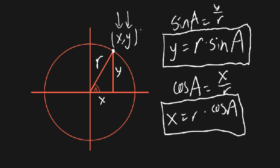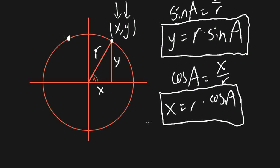This also gives us a way to interpret cosine and sine values. If the radius is just one — a unit circle — then the x and y coordinates of any point on the circle are given by cosine and sine of the relevant angle. This also lets us define cosine and sine for angles bigger than 90 degrees, since you can find x and y coordinates of points on the circle for any angle, even ones like 120 degrees.